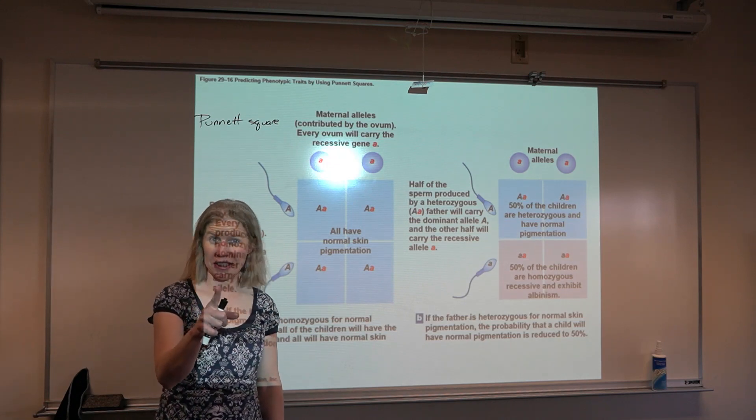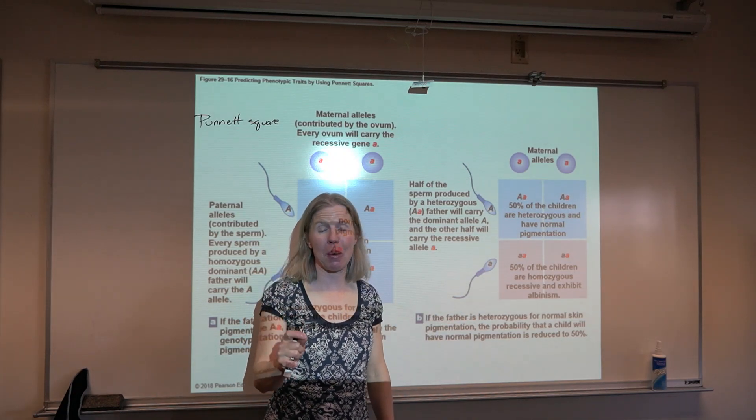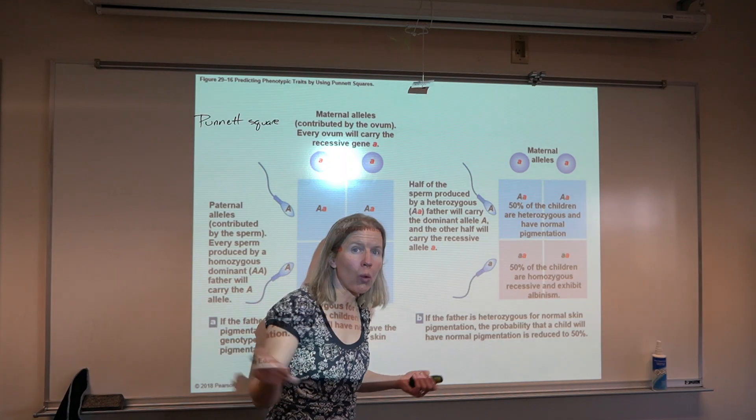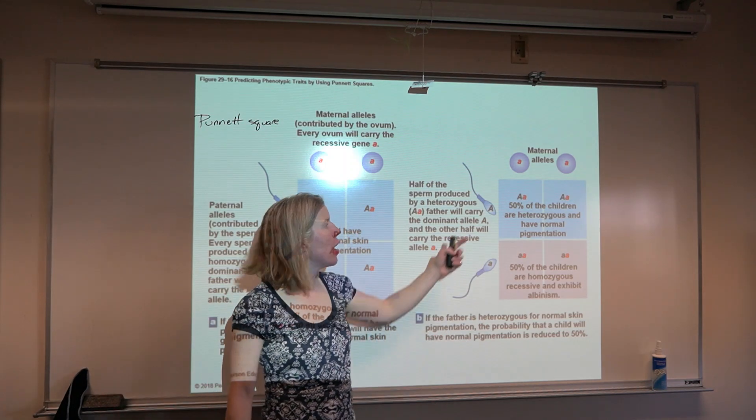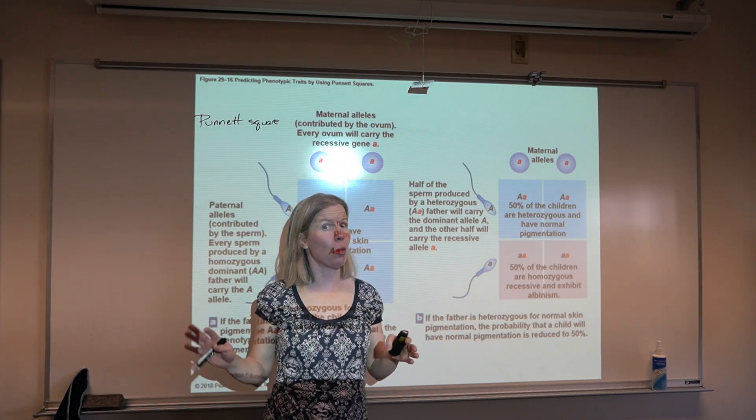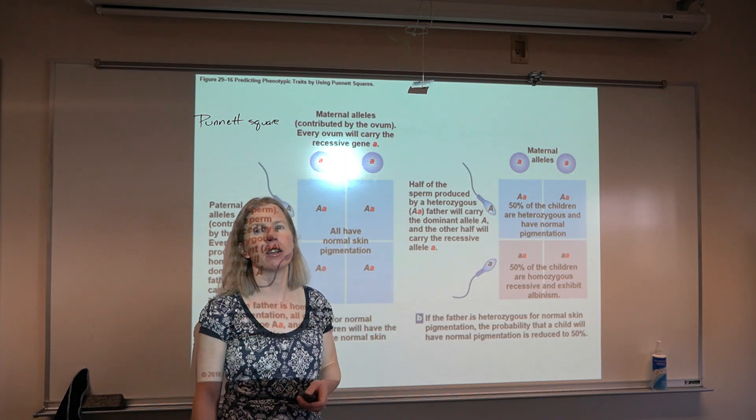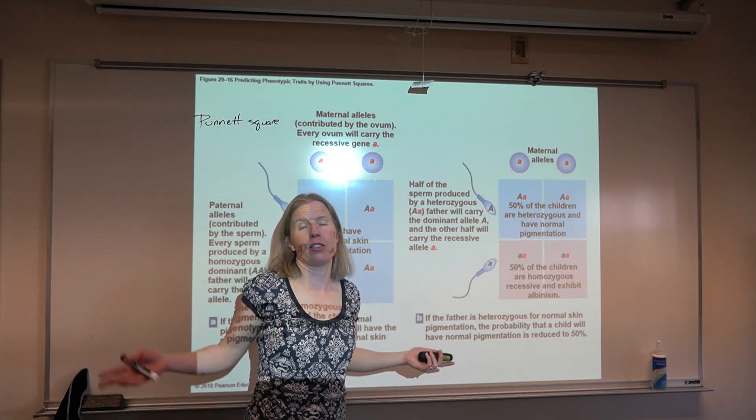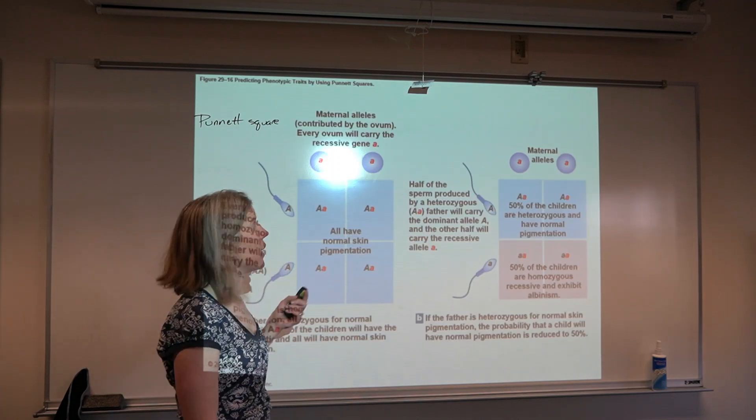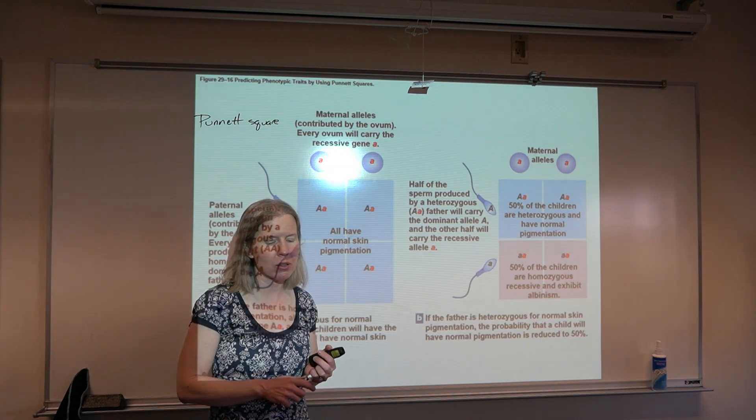One thing to keep in mind. When you do a Punnett square and it tells you probability, you have to remember that each additional offspring is like another roll of the dice. Just because you rolled one on the first time doesn't make it impossible to roll one the next time. So even here, when you're saying it's 50-50, you could easily have this set up and have five children with normal pigmentation, or five albino children. Each time, each offspring, it's a 50-50 chance. We all know that family that has like five boys, and you're like, how does that even happen? It's a 50-50 chance.